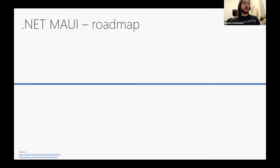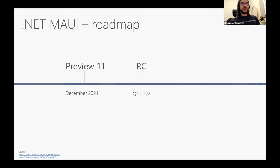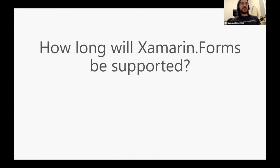What is the roadmap of .NET MAUI? As I mentioned, we currently have Preview 10. Preview 11 is planned for this month. The release candidate is planned for Q1 next year, and the GA version is planned for Q2 next year. I'm crossing my fingers for that date.